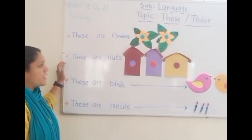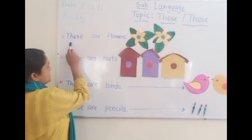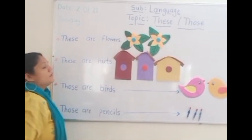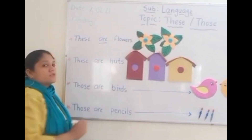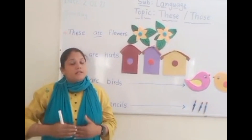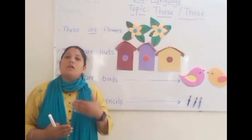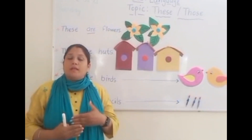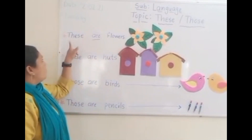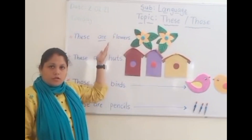In the same way we are doing 'these' and 'those'. You can see a very nice board here with flowers, hearts, birds, and pencils. The first sentence is: 'These are flowers.' We use 'are' because the things are many. 'These' is used for things which are more in quantity — whether it is a place, animal, or a thing — but they should be many.